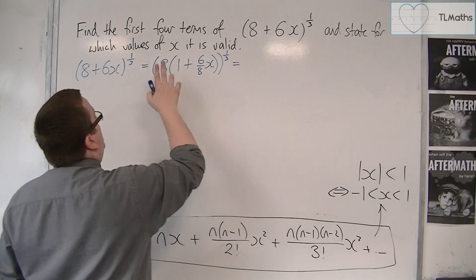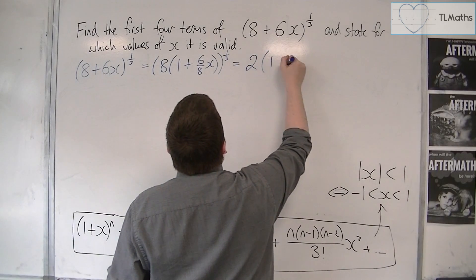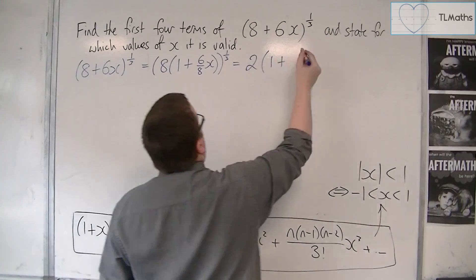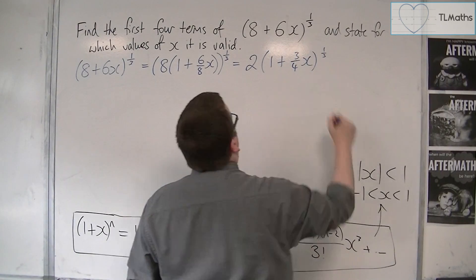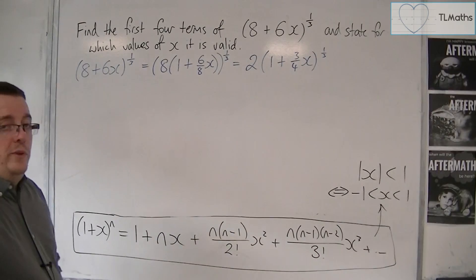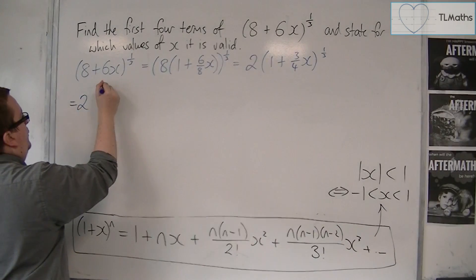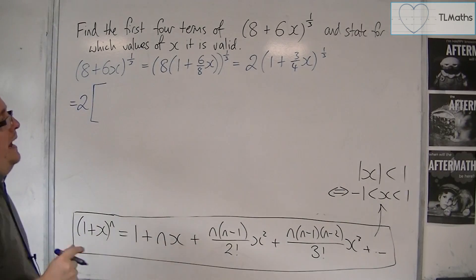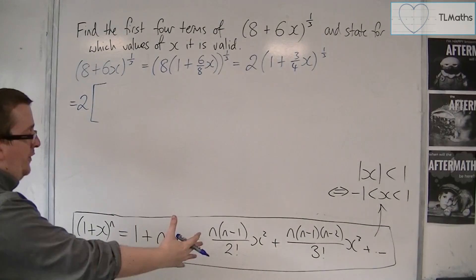Then I'm going to have 8^(1/3), which is just 2, times (1 + 3/4 x)^(1/3). So that's what I want to expand here using the formula.